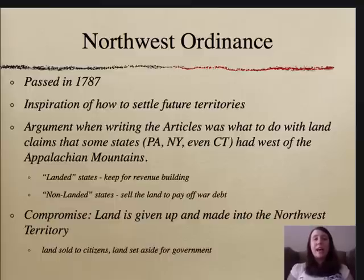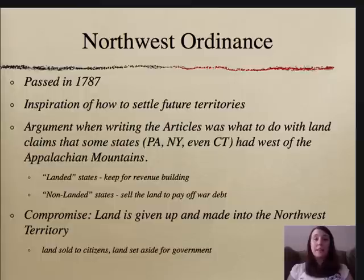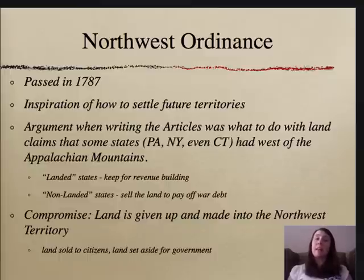The Northwest Ordinance was passed in 1787 and serves as an inspiration to settling future territories in the United States. An argument developed when the Articles were being written about what to do with land claims that some eastern seaboard states had in the West. These 'landed' states wanted to keep land to build their own revenue and power base. However, non-landed states wanted this land pooled collectively and sold to pay off war debt incurred during the Revolutionary War. The compromise was that the land would be pooled together, sectioned off, and sold to American citizens — paying off debt — while some land would be kept for government and education purposes. It was also sectioned off into five distinct territories that would later become five states.